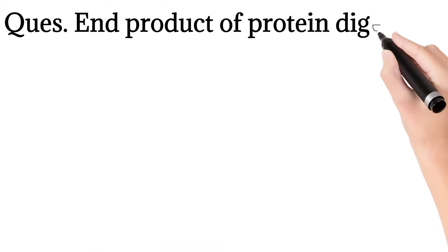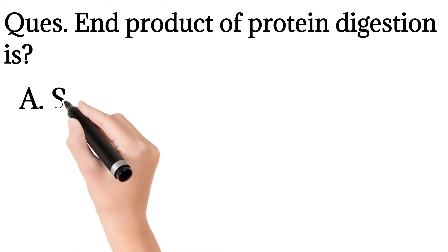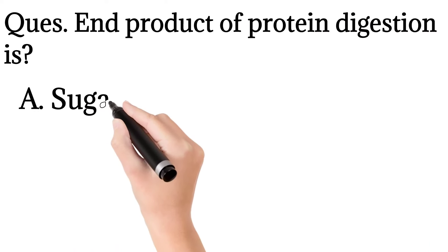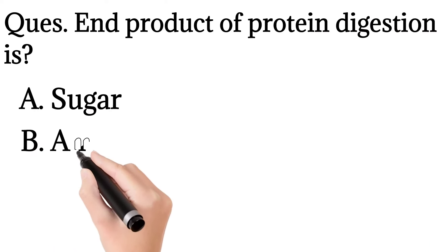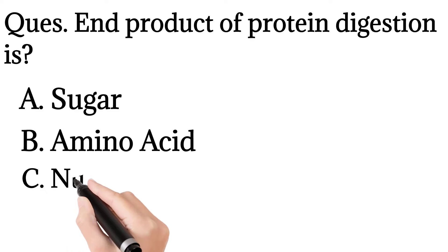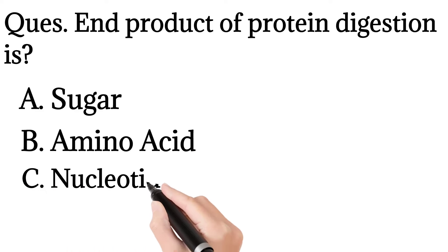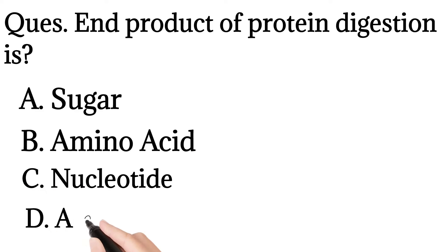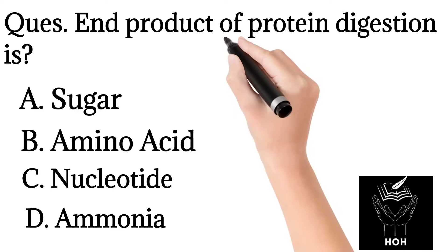1. The end product of protein digestion is: sugar, amino acid, nucleotide, or ammonia.